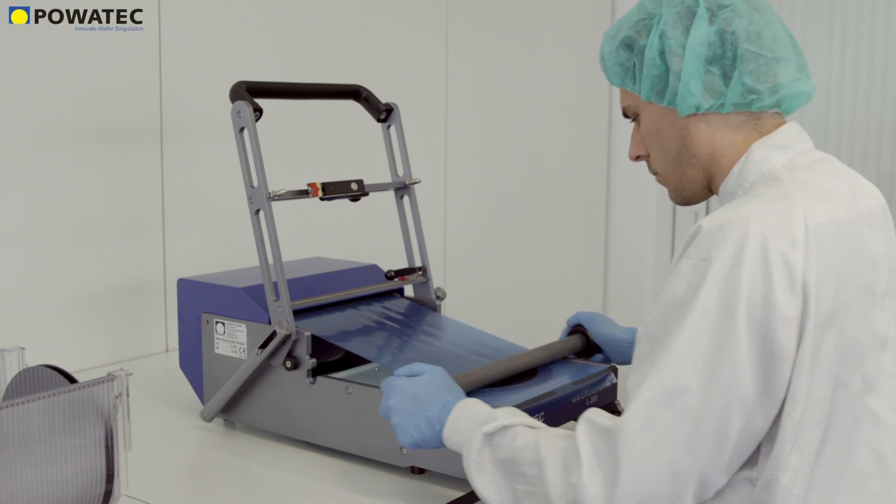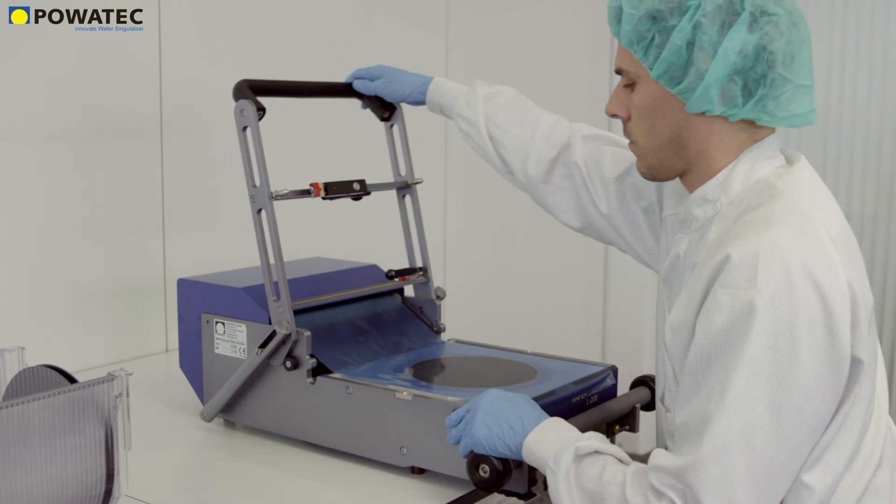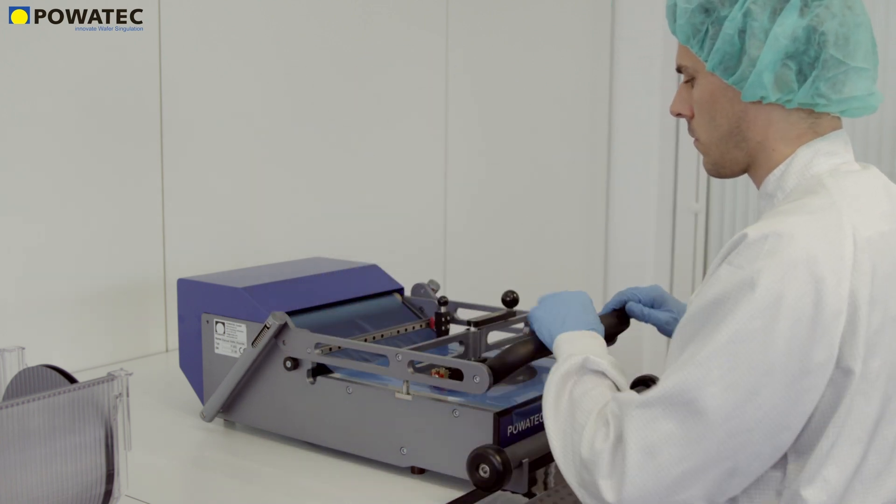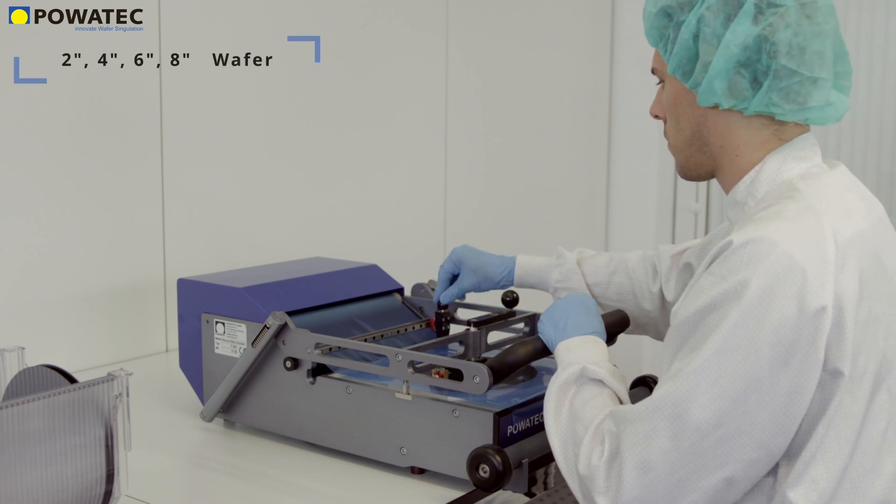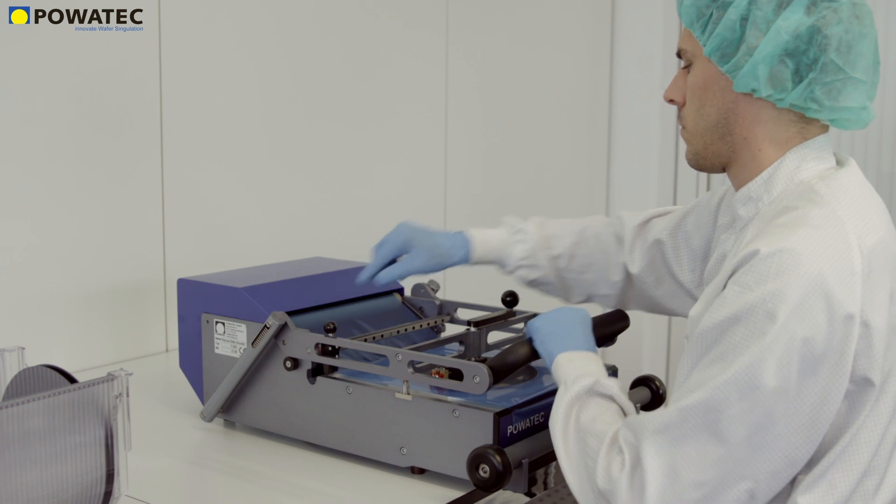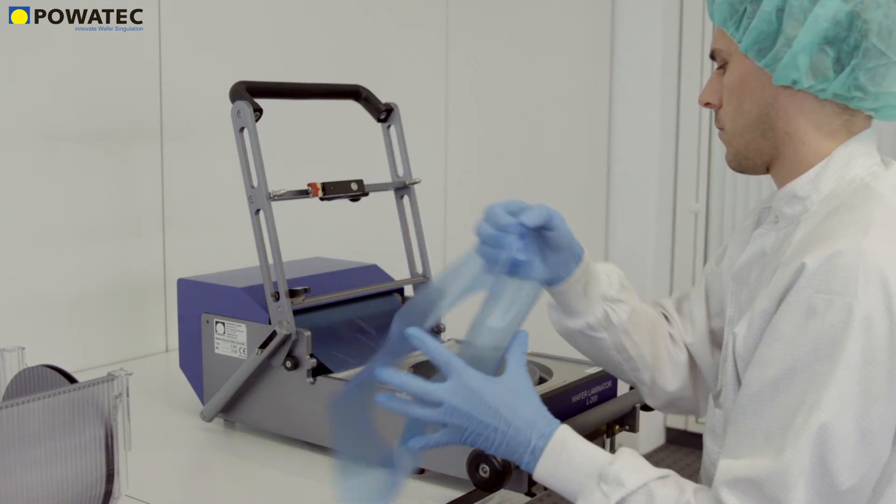Manufactured and developed in Switzerland, the Wafer Laminator L200 from Povitek is the ideal solution for the lamination of all commercially available protection tapes on wafers up to 8 inches. The lamination of a tape usually serves to protect the processed surface for the consecutive back grinding process.